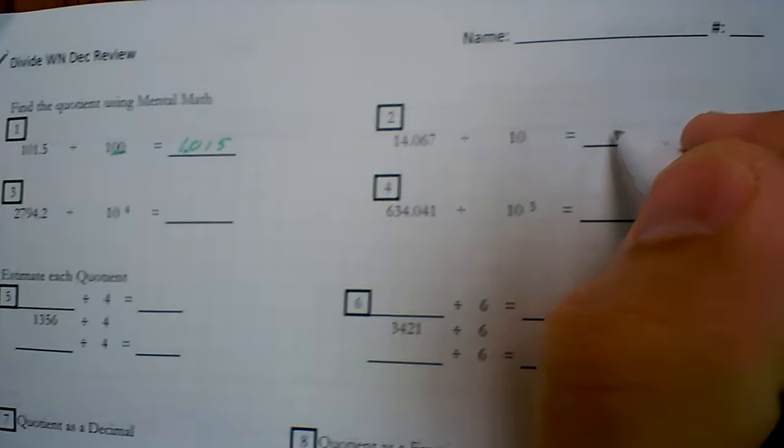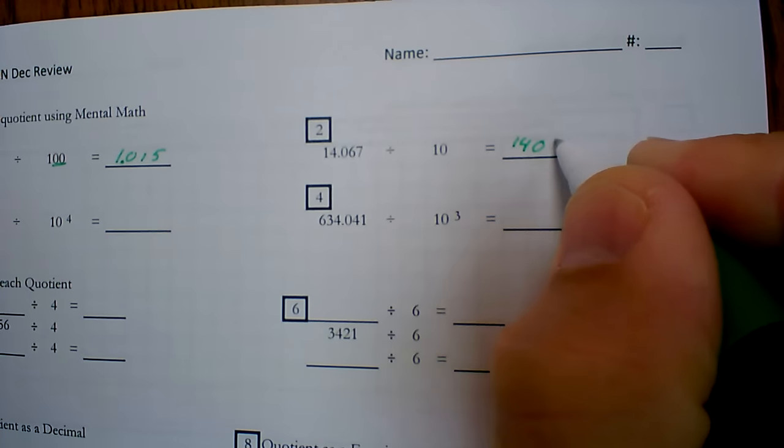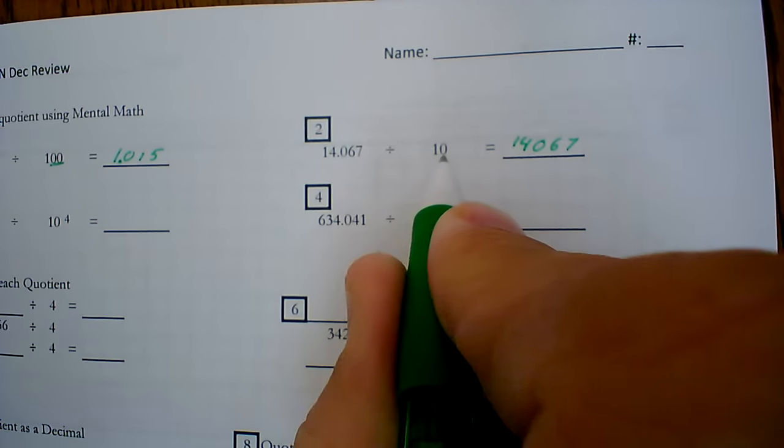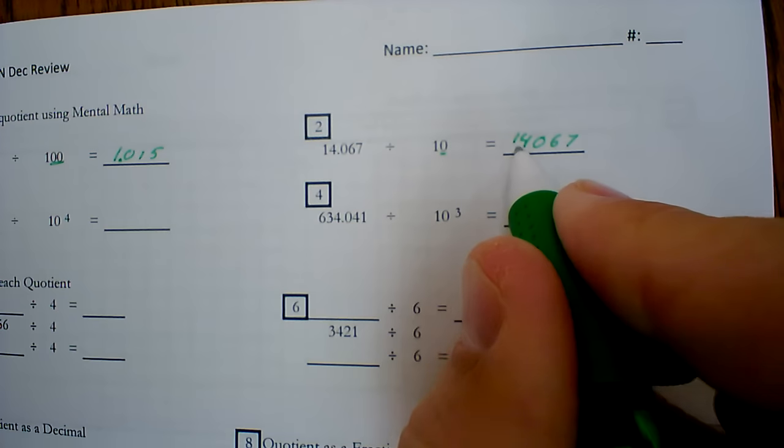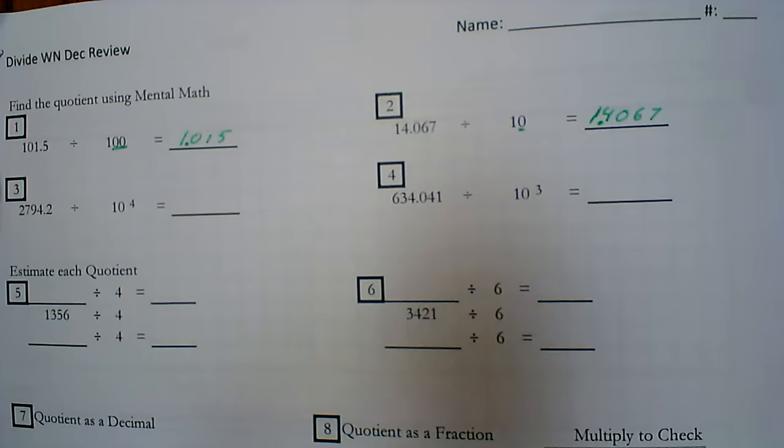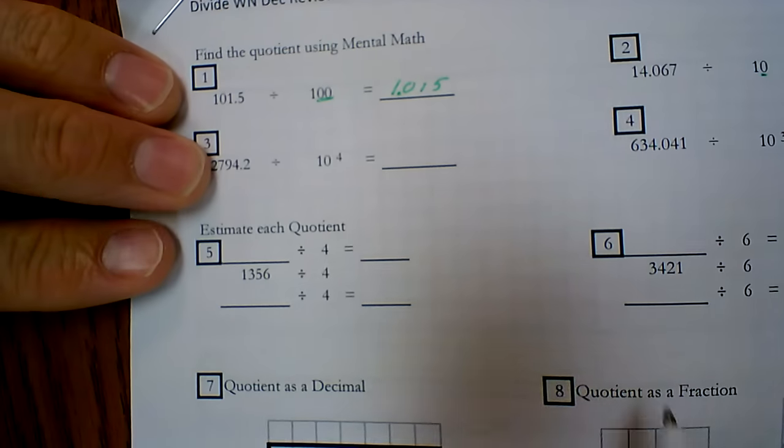Copy the digits, 14067. There's 10, it means I move the decimal point one place. Again, I'm moving it to the left because I'm dividing, which is making the number smaller.